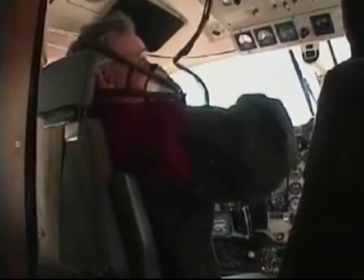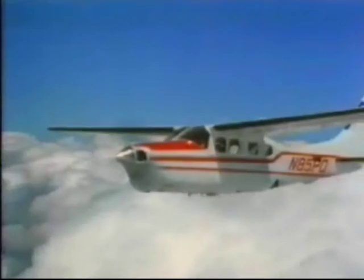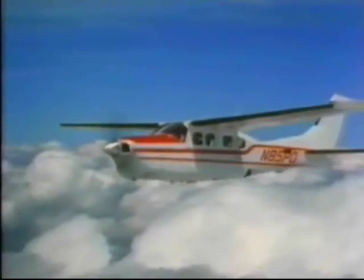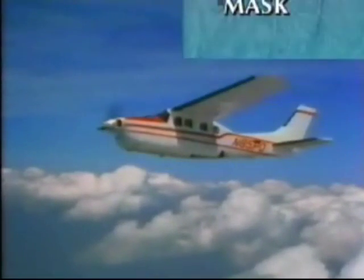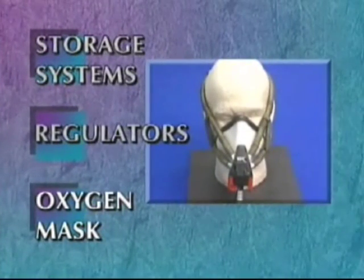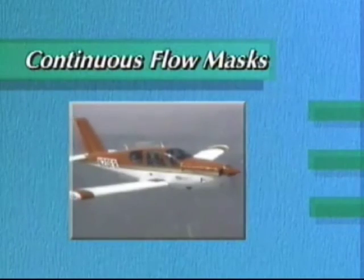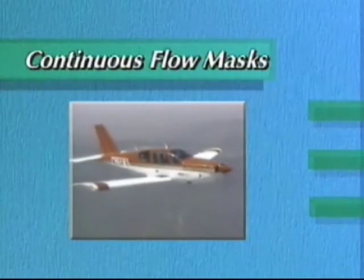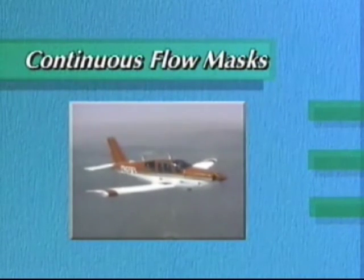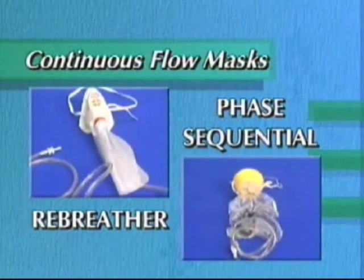You must ensure that there is adequate oxygen flow and the proper percentage of oxygen is being received for the altitude you are flying, to protect against hypoxia. The third part of any oxygen system is an oxygen mask or nasal cannulas. General aviation continuous flow oxygen masks come in two types: rebreather and phase sequential.